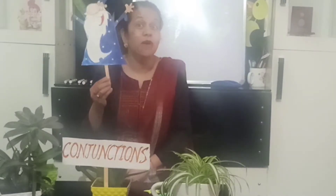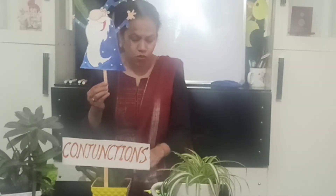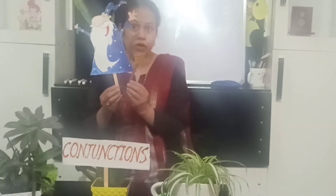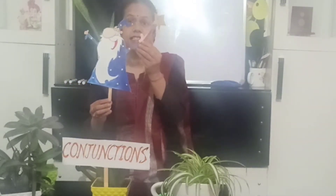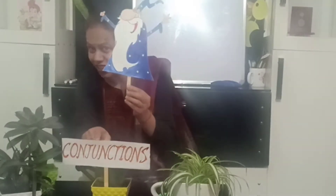Do you know who he is? He is a magician. He has magical powers. He has a magical wand. And do you know what he can do? He can join words, groups of words, and sentences together. And do you know what his name is? His name is Conjunction.